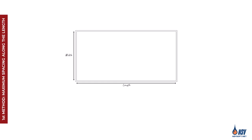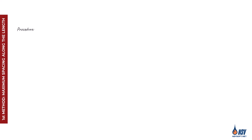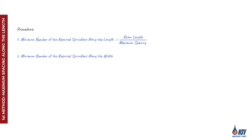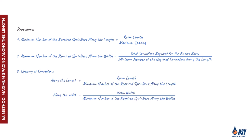The first method for locating sprinklers based on spacing requirements involves placing them according to the maximum allowable spacing along the room's length. This method includes three steps. First, determine the minimum number of sprinklers required to cover the room length by dividing the total length by the maximum spacing permitted by NFPA 13. Second, find the number needed across the width by dividing the total sprinklers required for the entire room by the number positioned along the length. Finally, calculate the exact spacing along both the length and width using the numbers derived from the previous steps.